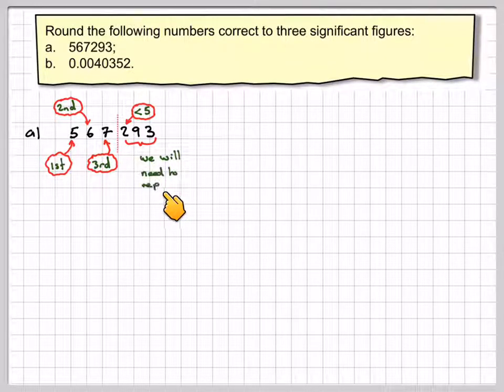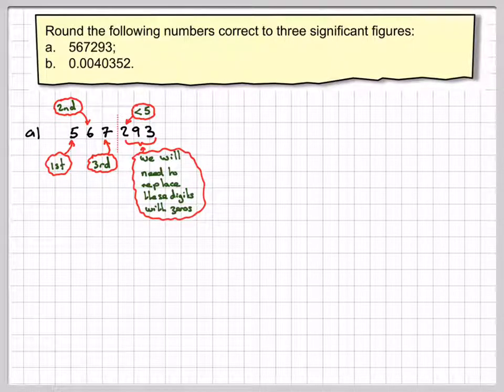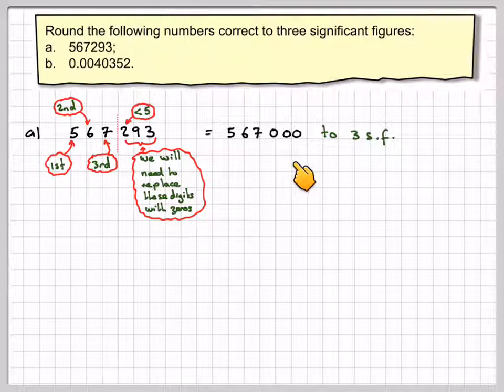However, the 2, the 9, and the 3 will need to be replaced with zeros. So the answer will be 5,6,7,0,0,0 to three significant figures. Don't forget to replace these three figures here with zeros.